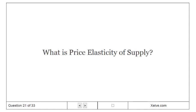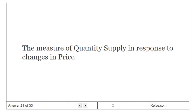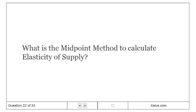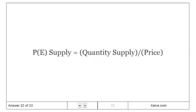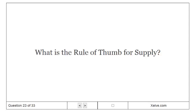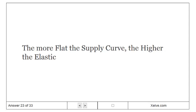What is price elasticity of supply? It is the measure of quantity supplied in response to changes in price. The midpoint method to calculate elasticity of supply: P-supply equals the midpoint formula. The rule of thumb for supply: the more flat the supply curve, the higher the elasticity.